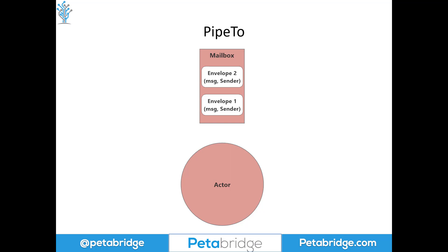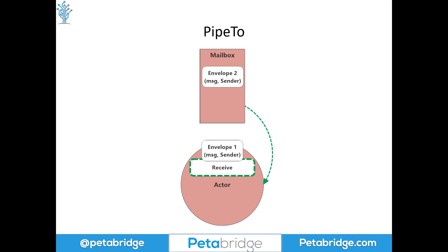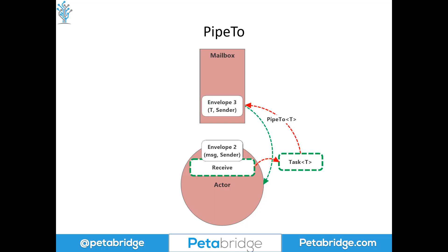Now let's contrast this with Pipe2, which is a slightly different take on how to do asynchronous programming with actors. In Pipe2, we use a normal receive method. Even though this receive method is going to generate a task that we could await, we're not going to. Instead, we kick off this task but don't wait for it to complete before beginning to process the next message. What we're going to do is start processing message two right away. That task, once it completes, we use the Pipe2 extension method — part of Akka.net — to have the output of that task delivered back into the mailbox as a new message.